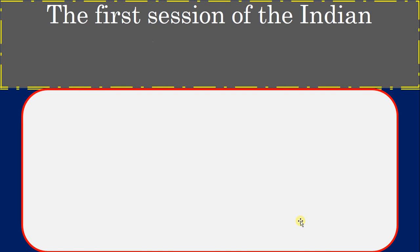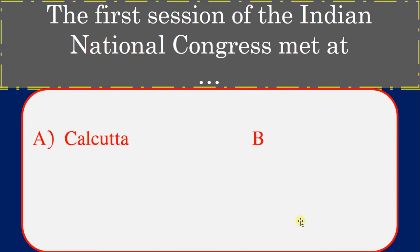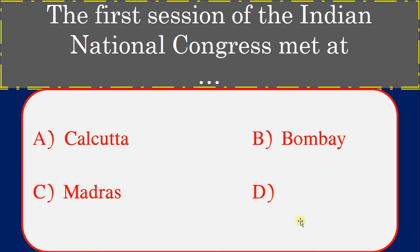The first session of the Indian National Congress met at which city? Options: Kolkata, Bombay, Madras, Hyderabad. Correct answer: Bombay.